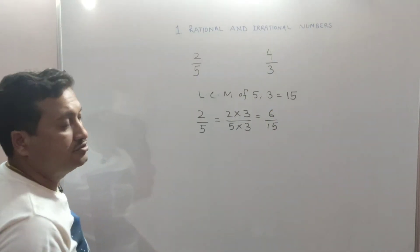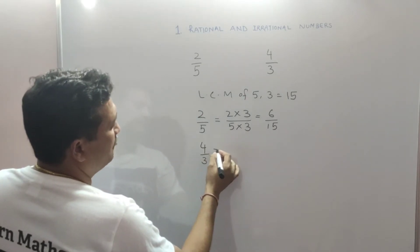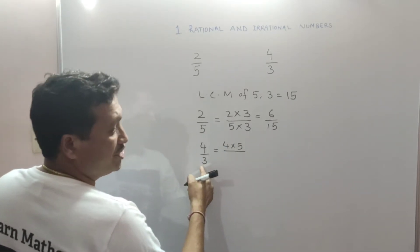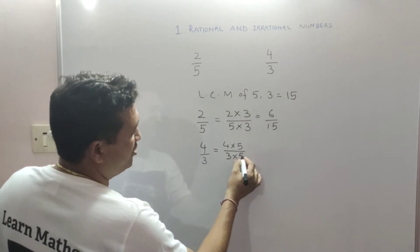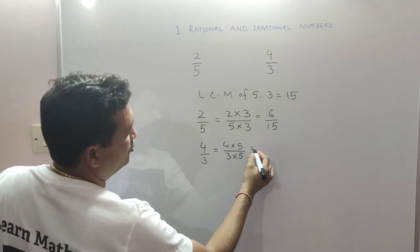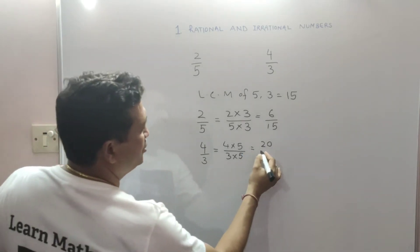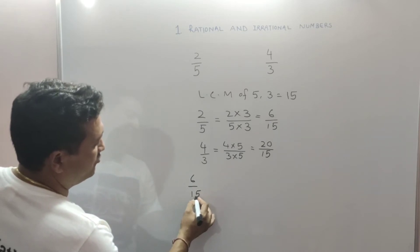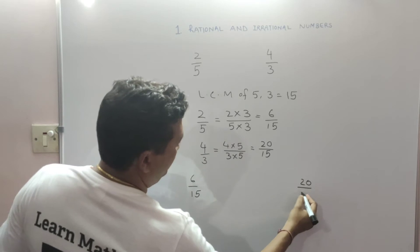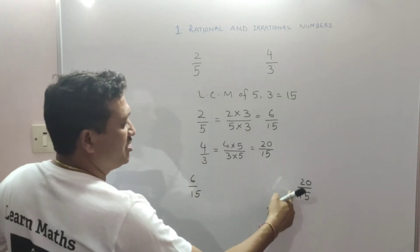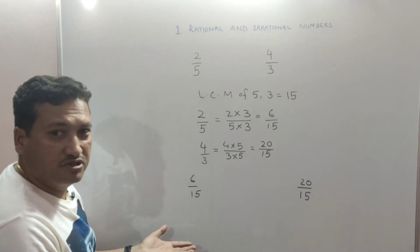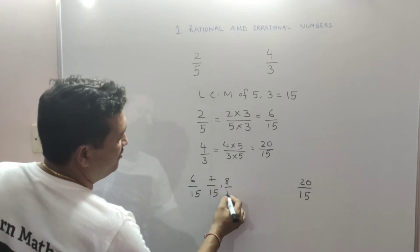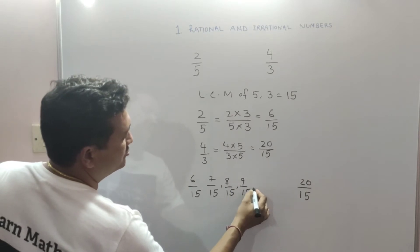The second rational number is 4 upon 3. Here I also need to make the denominator 15, so I multiply numerator and denominator by 5, because 3 into 5 is 15. So 4 into 5 is 20 and 3 into 5 is 15, giving us 20 upon 15. Now between 6 upon 15 and 20 upon 15 there are many rational numbers: 7 upon 15, 8 upon 15, 9 upon 15, 10 upon 15.